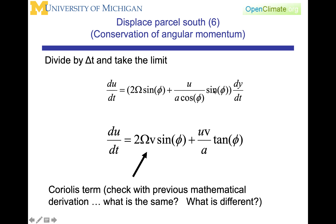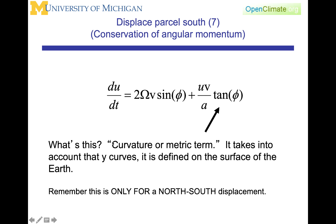We've also used the definition that sine over cosine equals tangent, and that dy/dt equals v. So we see that the acceleration in the x direction or the longitudinal direction is related to the velocity in the y direction or the latitudinal direction. What is this additional term sitting out here — uv over a tangent? This is one of the terms called the curvature or metric term, and it takes into account that y, that displacement, actually curves as it is defined on the surface of the Earth.